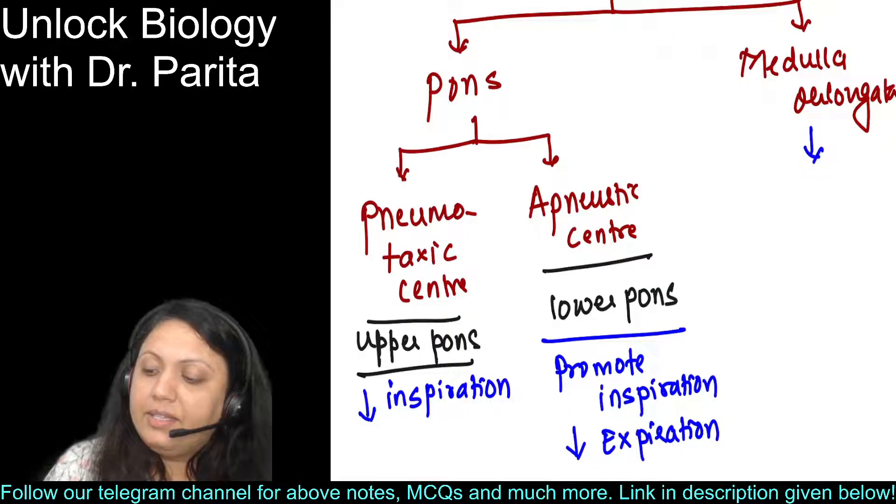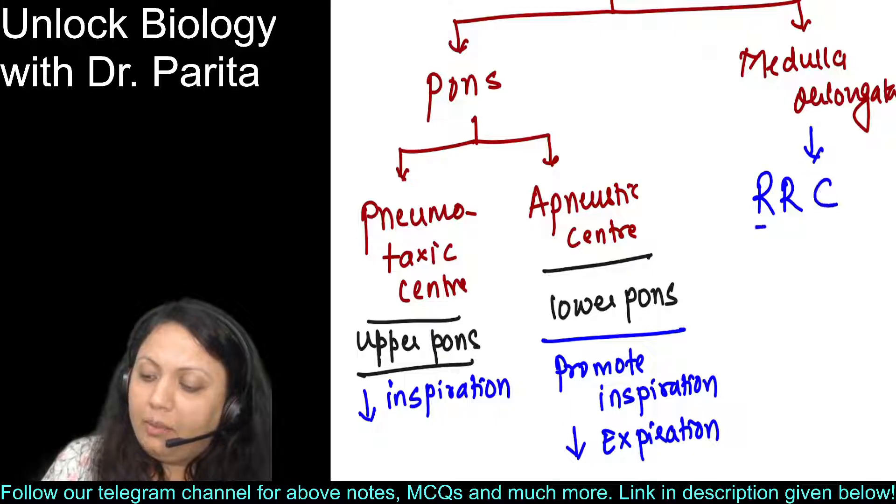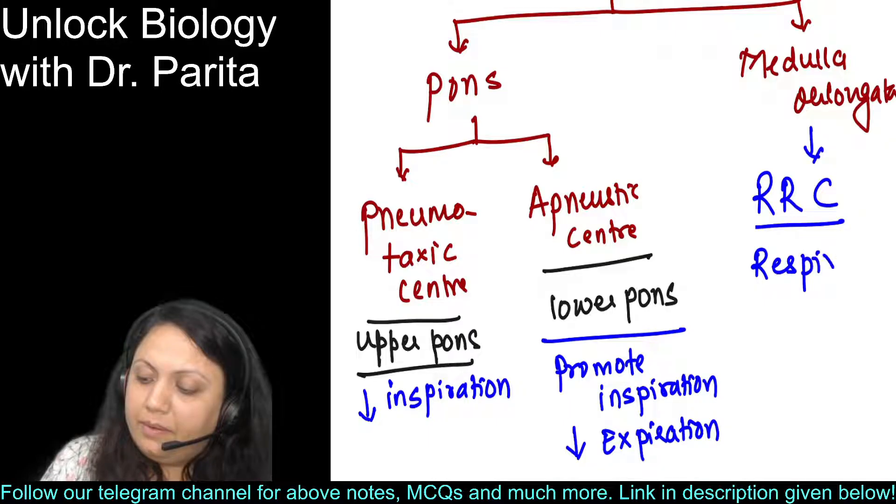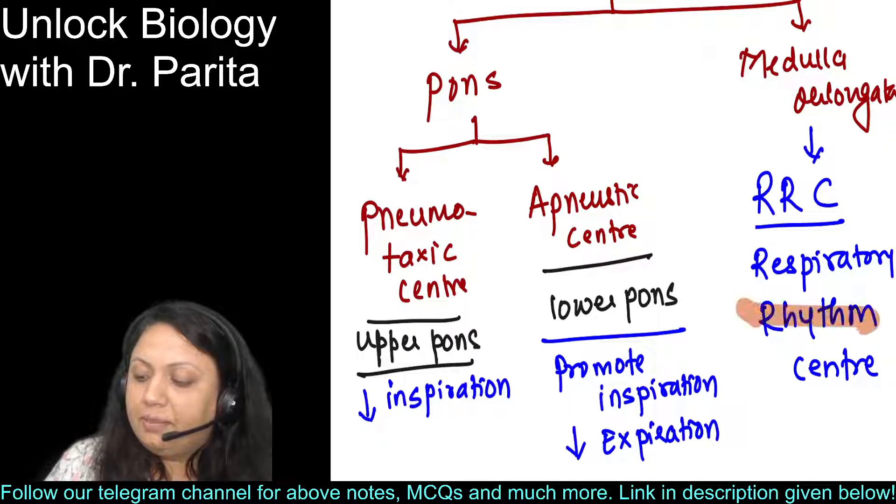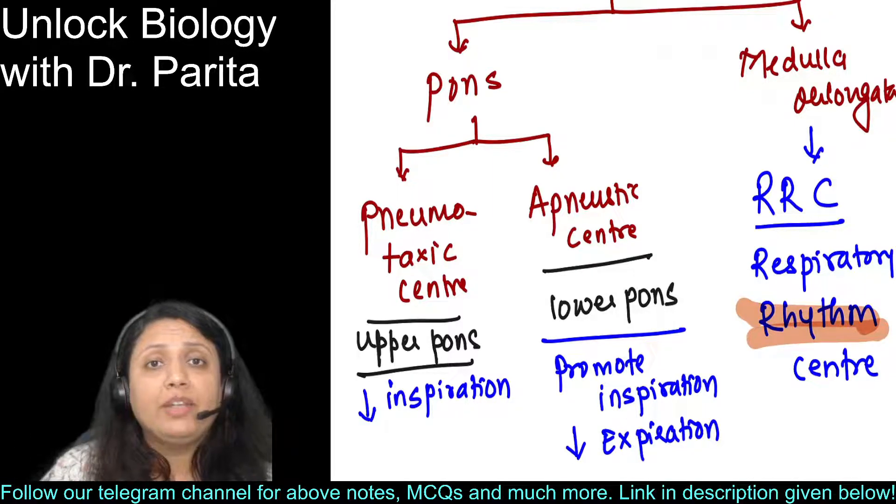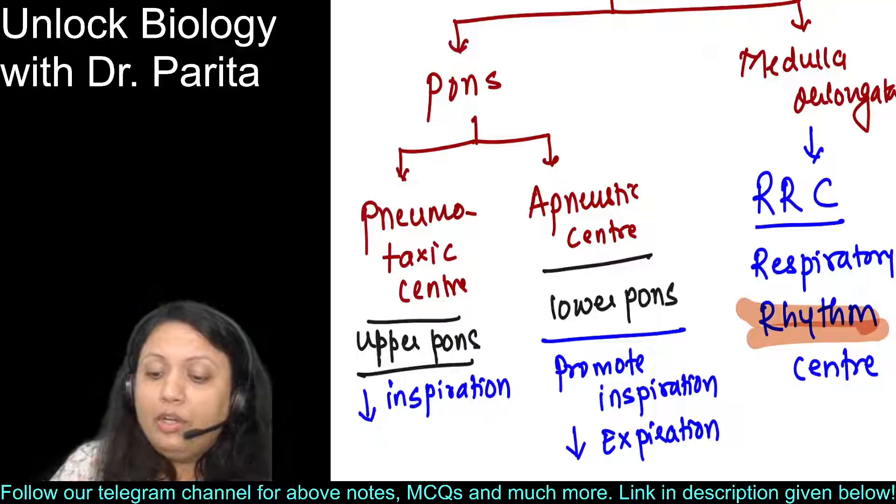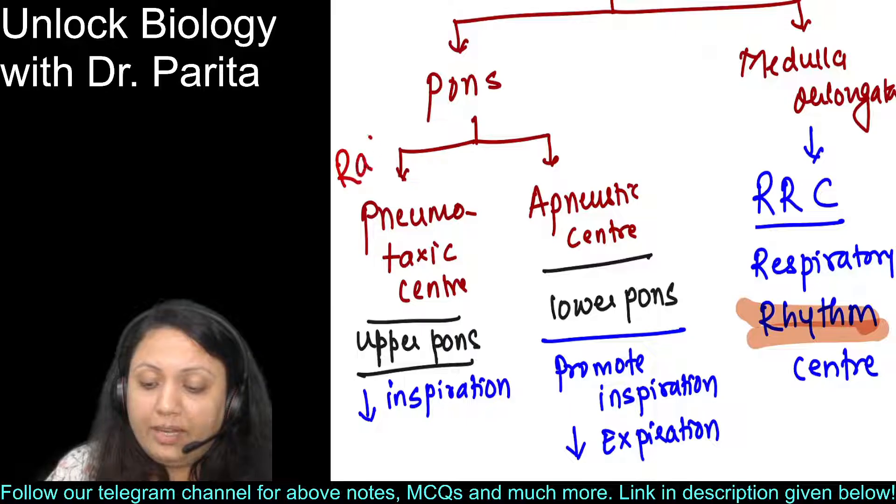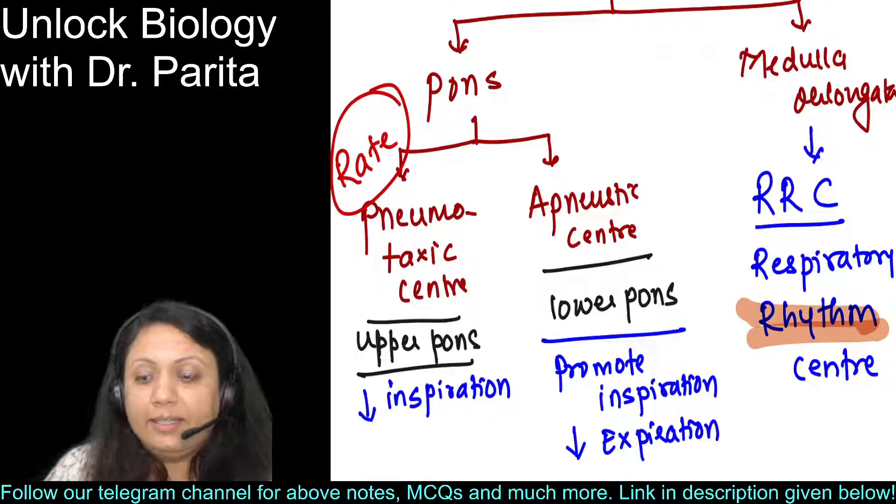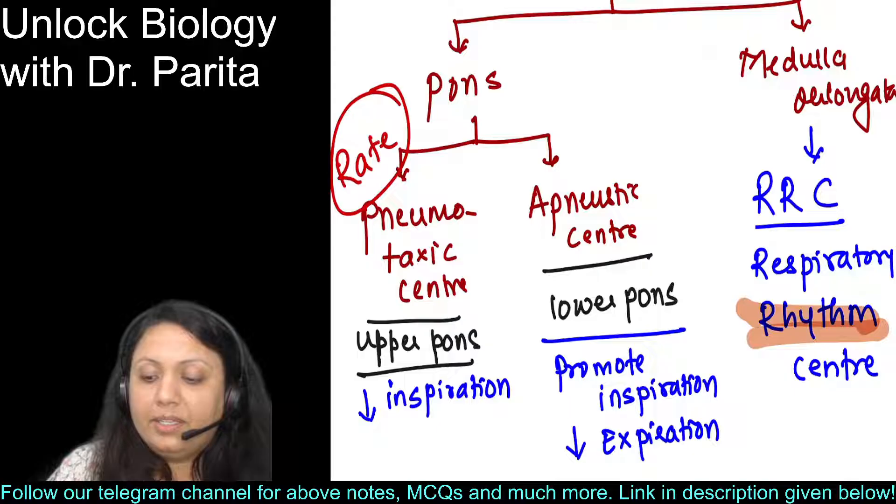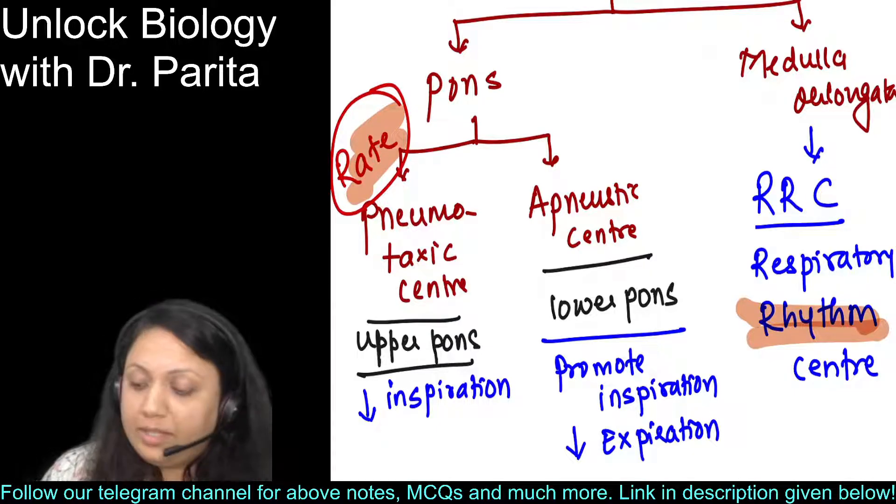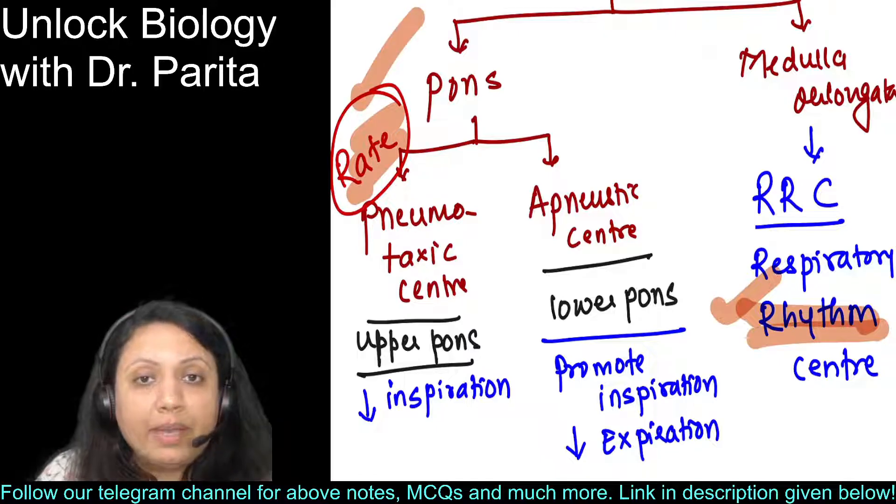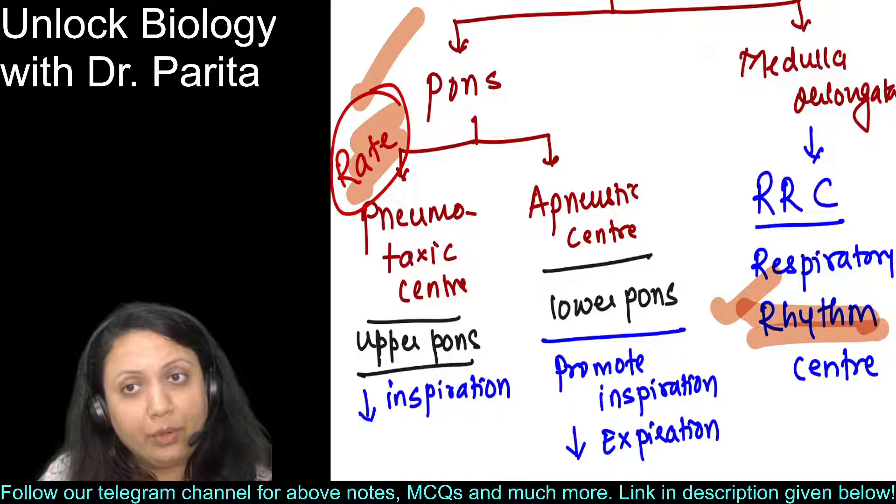Your medulla oblongata has something called RRC - respiratory rhythm center. There is one keyword: RHYTHM. Rhythm is maintained by your medulla oblongata. For pneumotaxic, the very important word is RATE. Rate is by your pons or pneumotaxic center, and rhythm is by your medulla oblongata. This is very important to understand.